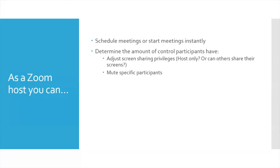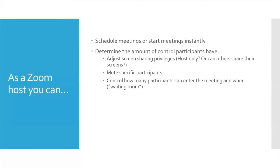You can mute specific participants if you need to. If there's a lot of people and you want to cut down on chatter, you can always mute all and then just allow a couple of people to have audio — that way you cut down on all the sounds crossing into each other. You can control how many participants enter the meeting and when. Zoom refers to this as a waiting room — so you can invite 20 people, but maybe 10 of those you'll keep in a queue and not allow them to enter until a certain point, just to maintain crowd control.